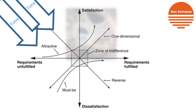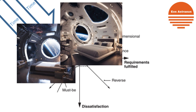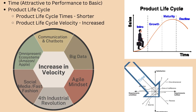That attractive quality of a hotel or vacation home with an ocean and skyline view could, at some point in the future, be replaced with an orbital view. Think about the cycle times within the Kano model — from attractive to performance to basic — which you can also apply to product life cycles. Product life cycles have gotten shorter and the velocity has increased: the speed of going from attractive to basic, and from introduction to growth to maturity to decline, has significantly accelerated.